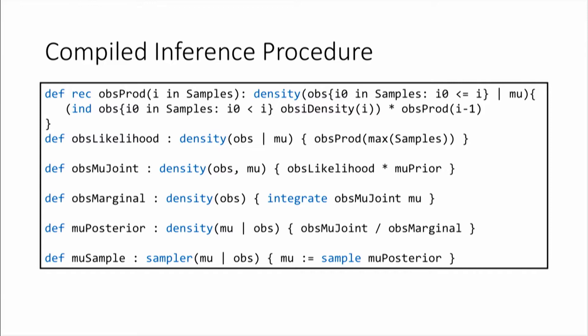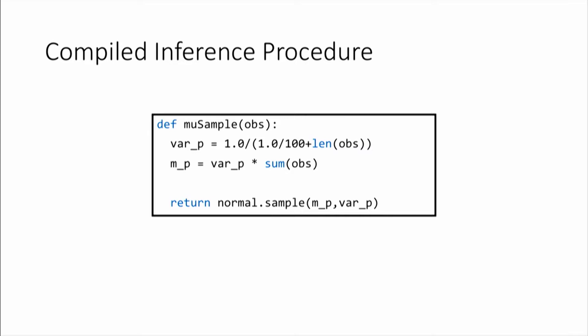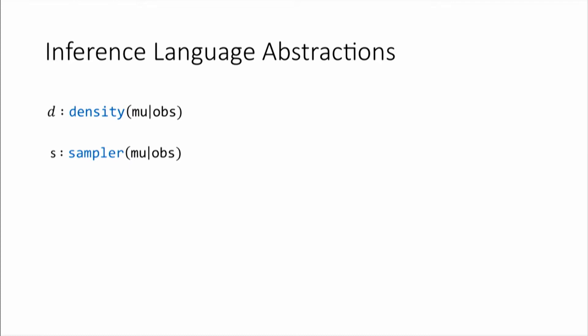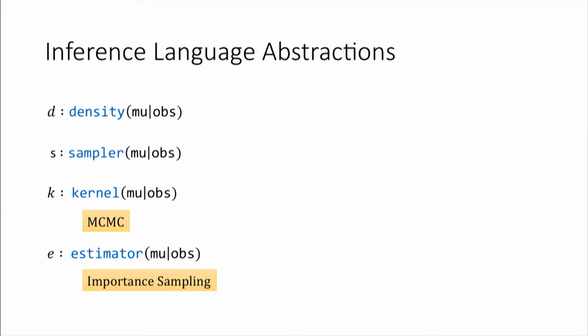After type checking, Shuffle compiles the inference procedure to executable Python code — there are many interesting things that go into this compilation, so come find me afterwards. I want to emphasize the abstractions you can use to build distributions in this language. Beyond densities and samplers, there are two more types: a kernel from mu given obs is an MCMC transition kernel that eventually converges to that distribution; and an estimator from mu given obs is an object that returns a sample and weight, usable as an importance sampler for the distribution mu given obs. These are the four types of distributions you can build.